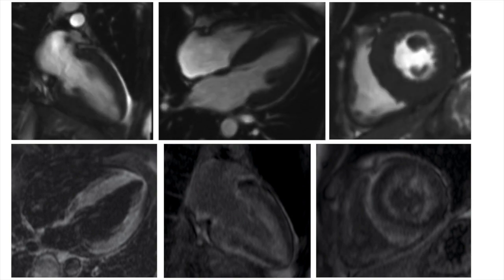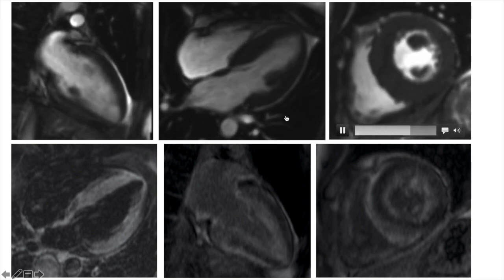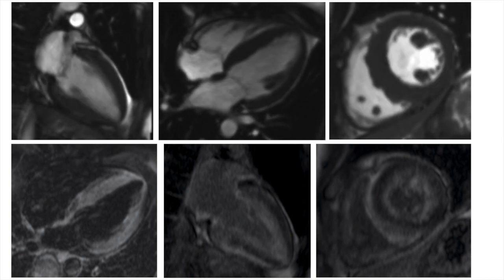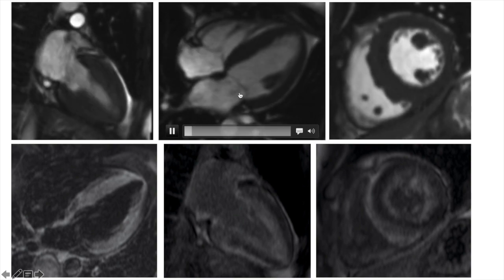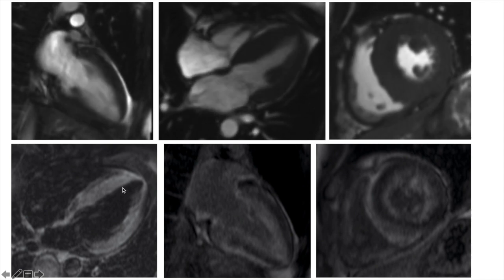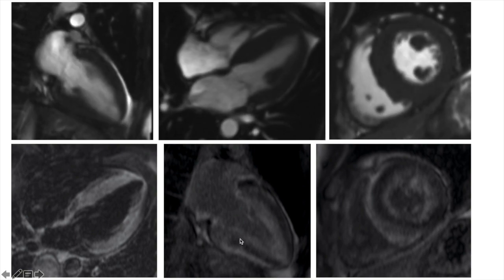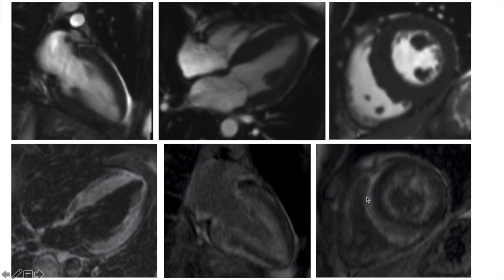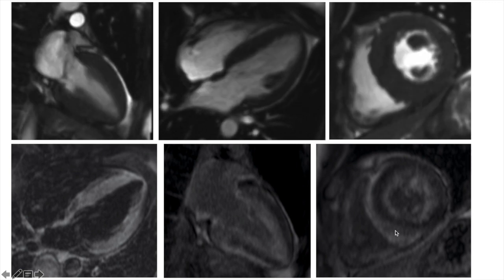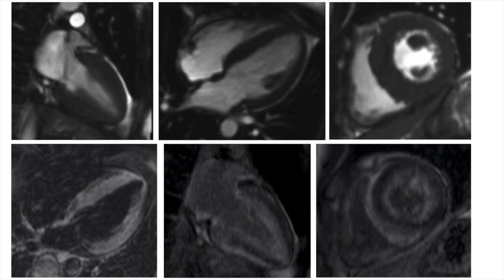This is another patient with similar concentric LVH but preserved systolic function. The top row shows concentric LV hypertrophy, mild interatrial septal thickening, and mild to moderate mitral regurgitation. The bottom left STIR image shows diffuse myocardial hyperintensity. The 2-chamber and short axis late gadolinium enhancement images show diffuse subendocardial delayed enhancement in the LV with enhancement along the RV side of the septum. To conclude, cardiac MR is very specific in the identification and diagnosis of cardiac amyloidosis.